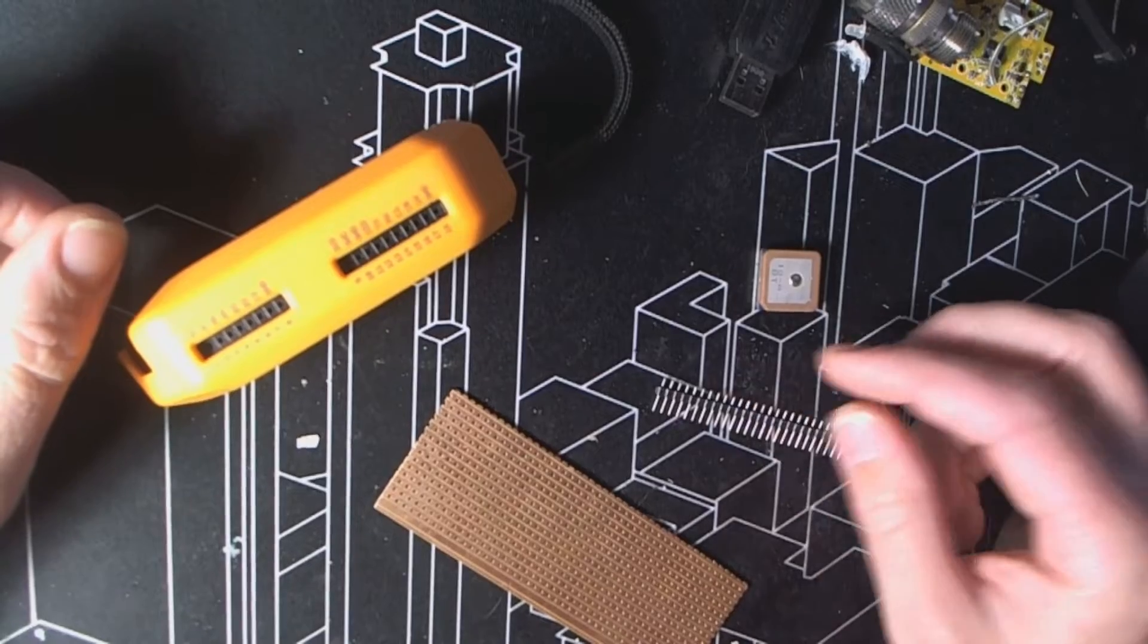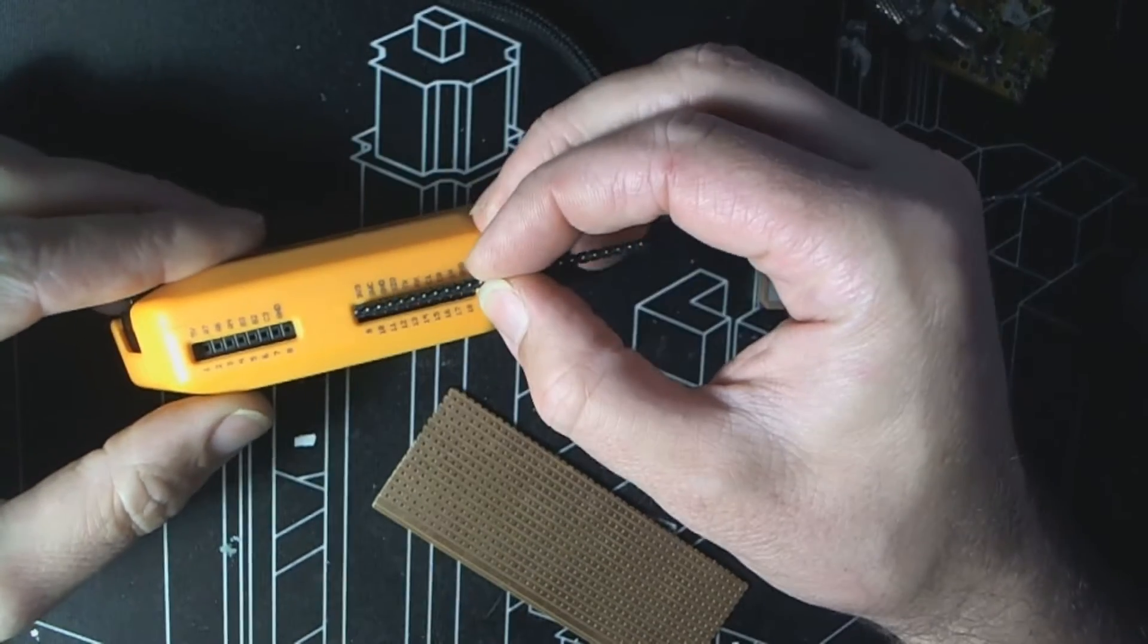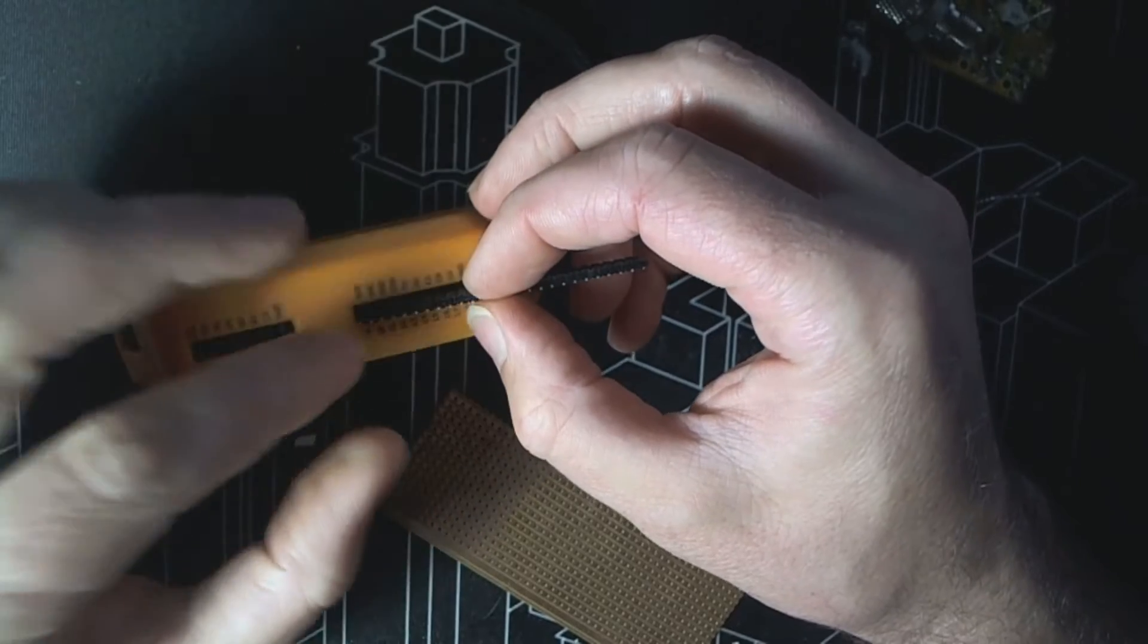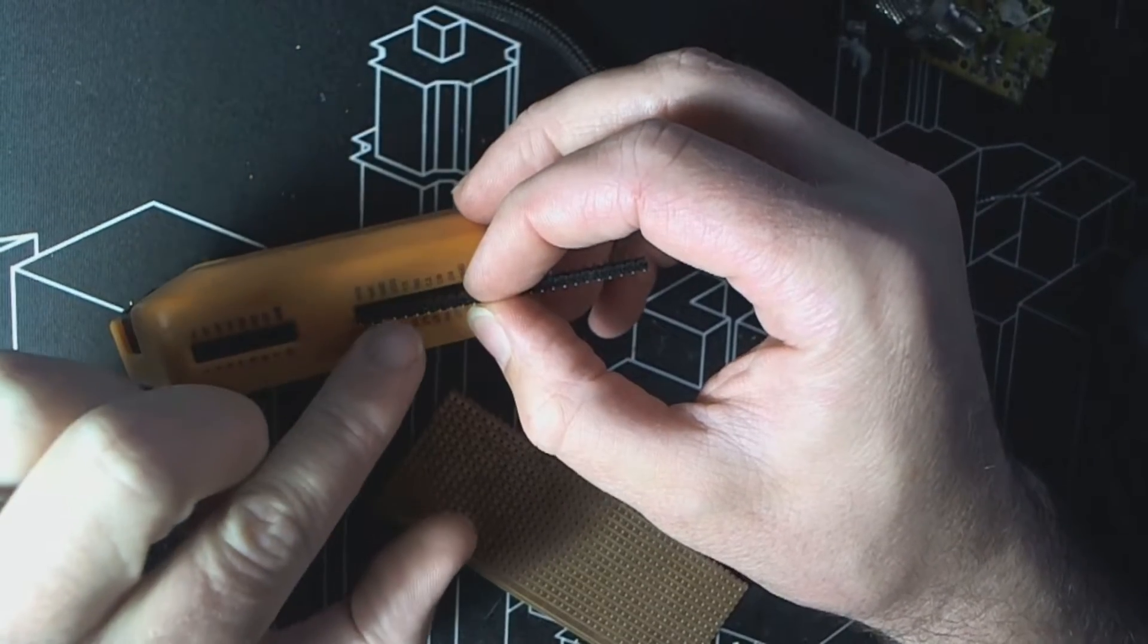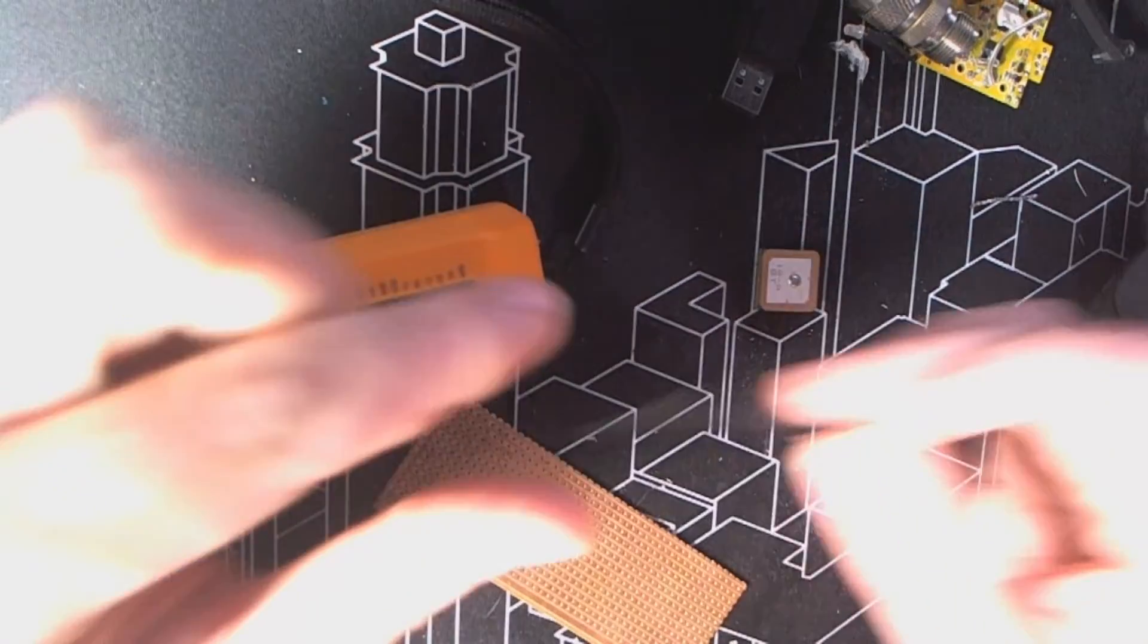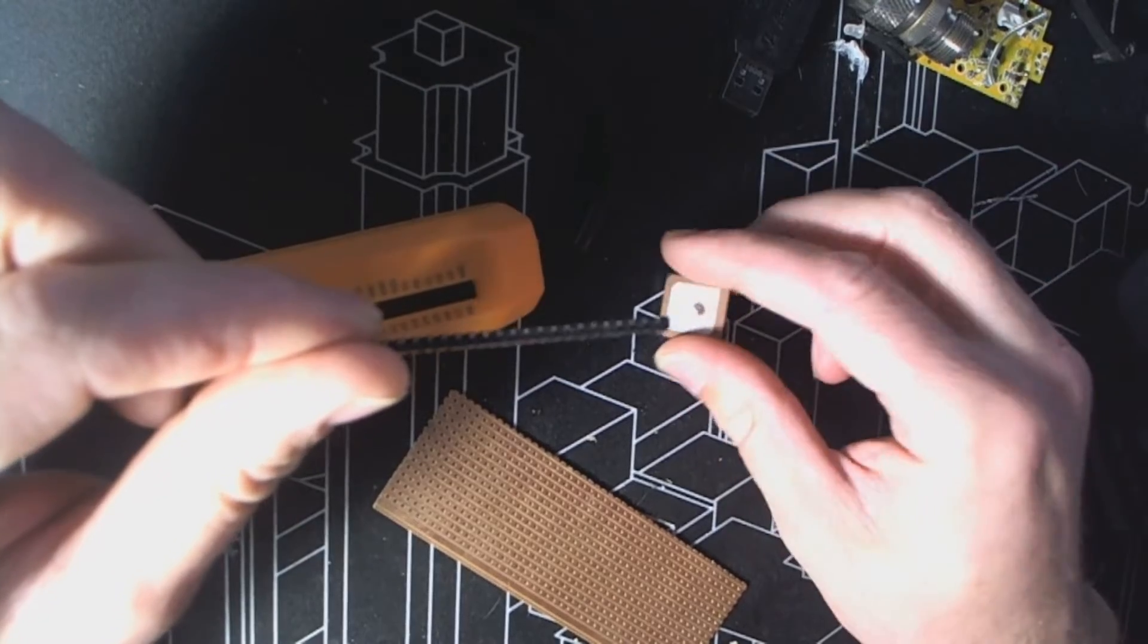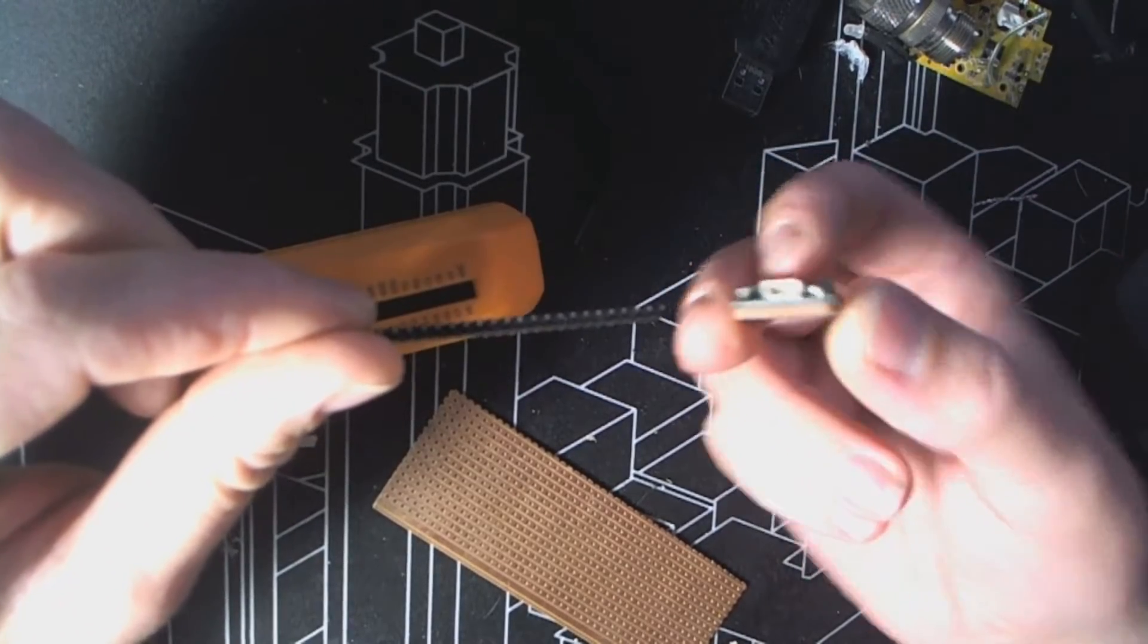We're going to start off with our header pins and we're going to measure up from 3.3 volts to our TX site. Because our unit here only requires four pins, or only has four pins on the plug.